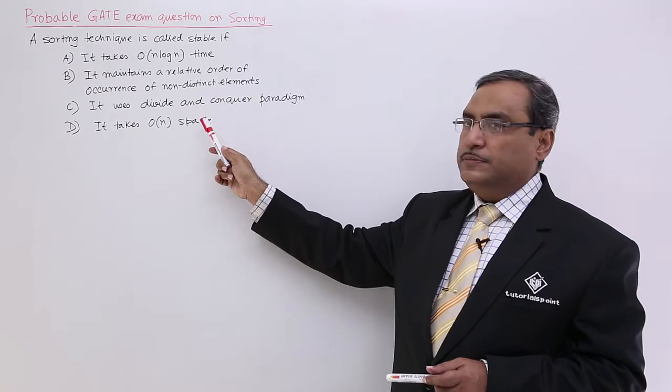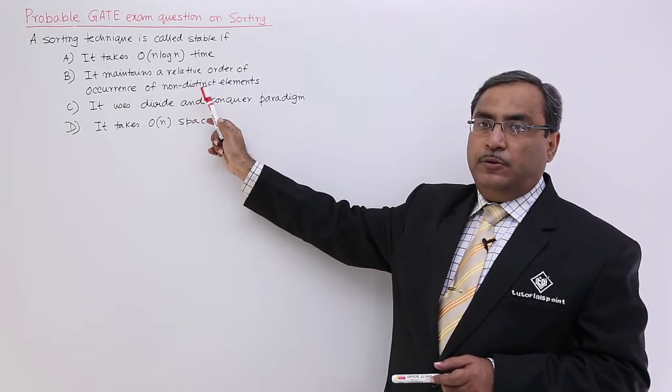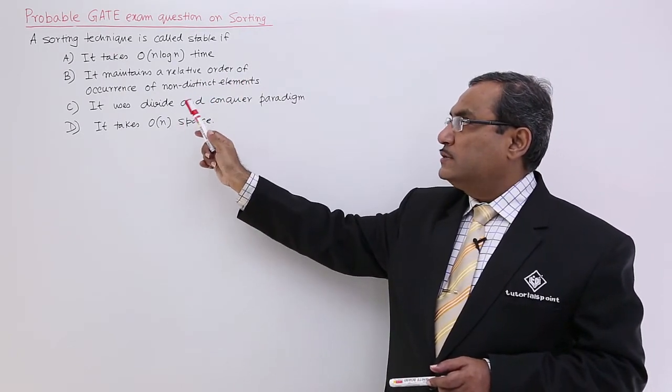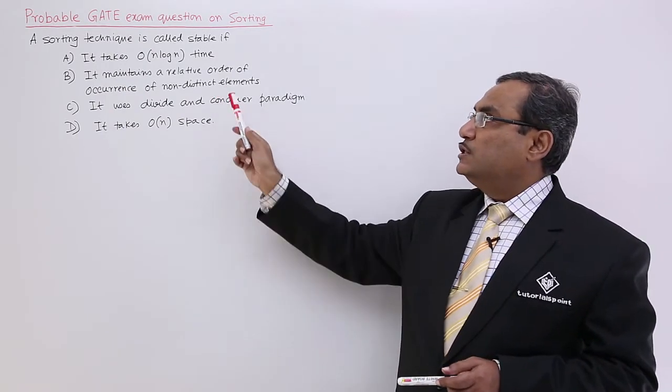If such question comes, then obviously put a tick for the option where this particular statement will be there. It maintains a relative order of occurrence of non-distinct elements. That is the answer for this particular question.